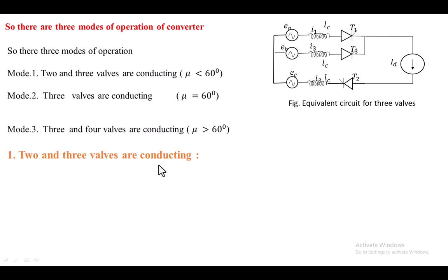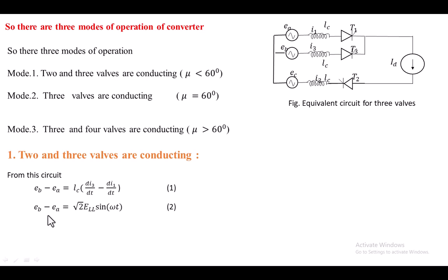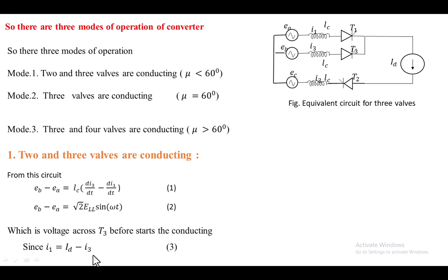When the overlap angle is less than 60 degrees, we ensure that previously T1 and T2 are conducting. Now, we apply the gate voltage to T3, so T3 also starts conducting. Applying KVL in this loop, we get: Eb minus Ea equal to Lc into dI3/dt minus dI1/dt. I1 is the current through the first device and I3 is the current through the second device. We know that the Eb-Ea voltage equals root-2 times ELL sin(ωt). Applying KCL at this node gives the relation I1 equal to Id minus I3.